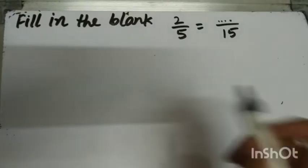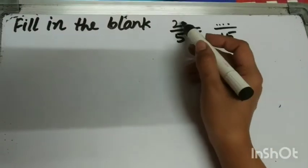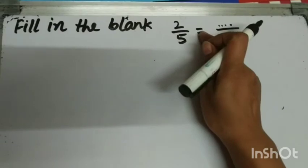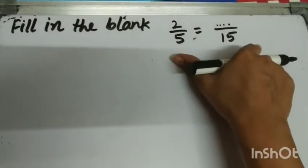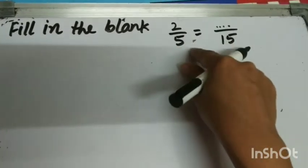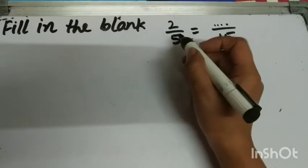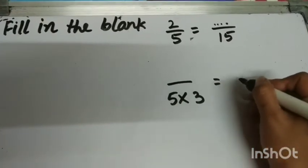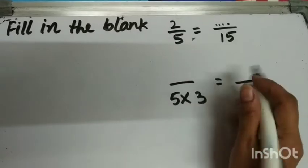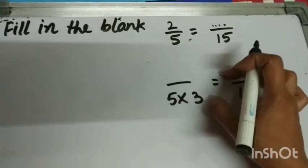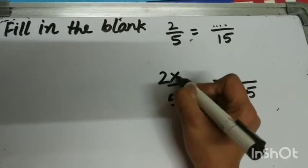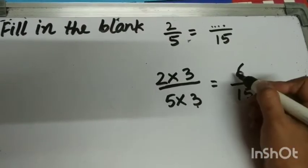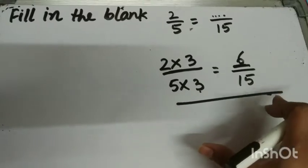Let's take one more example. The question is: fill in the blank — two upon five is equal to dash upon fifteen. The equal sign means these are equivalent fractions. We multiply numerator and denominator by the same non-zero number. I need to find by which number to multiply five to get fifteen — five multiplied by three gives fifteen. So I multiply the numerator two by three as well, giving six. The answer is six.